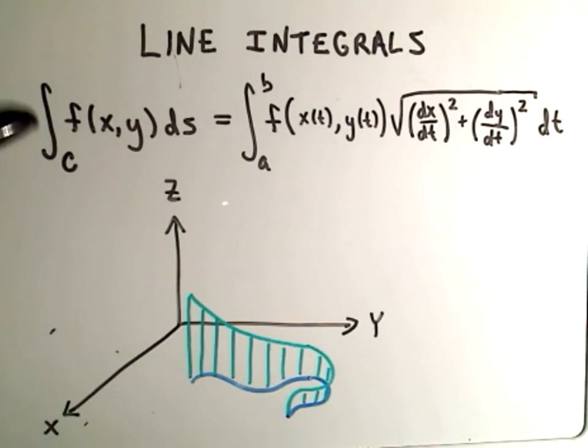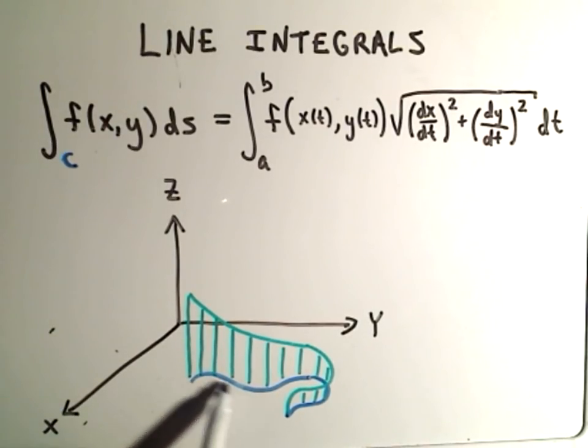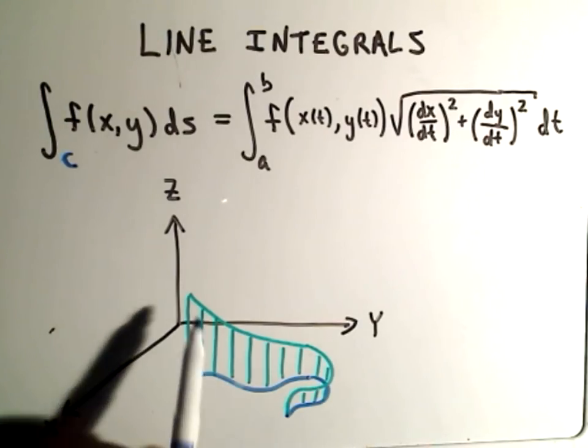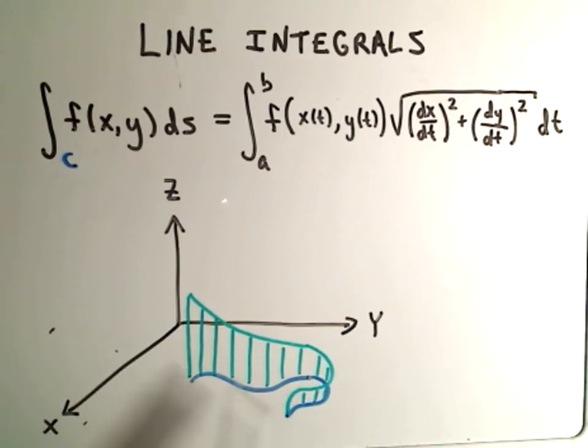The idea is we're going to integrate some function of x and y over some curve C, and you can think about your curve C as being the blue line here in my picture. There's some curve, and what we're going to do is imagine the green part being the function that's kind of above the curve.